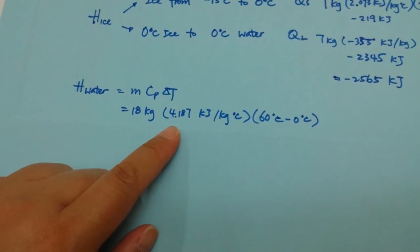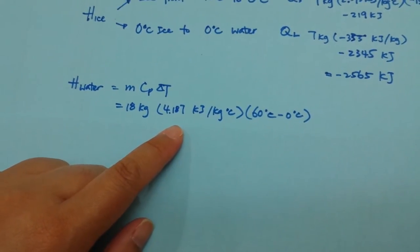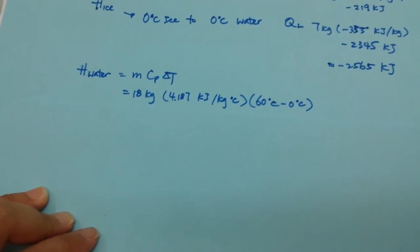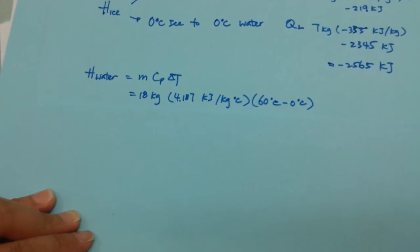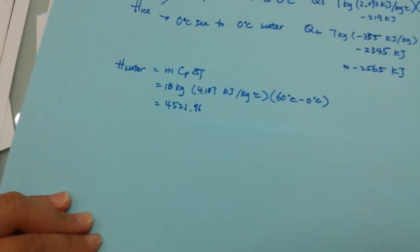Paying attention that we are using 4.187 kilojoules per kilogram degree as our heat capacity. This is our calculation.